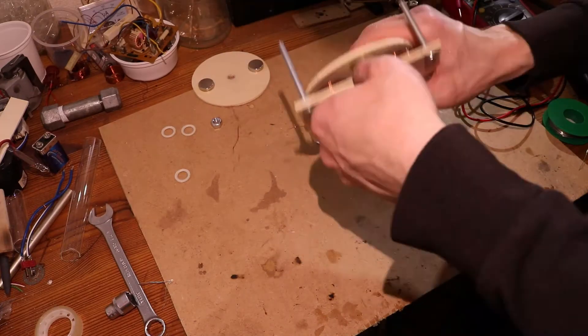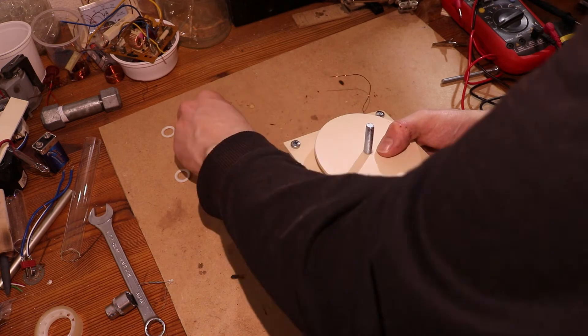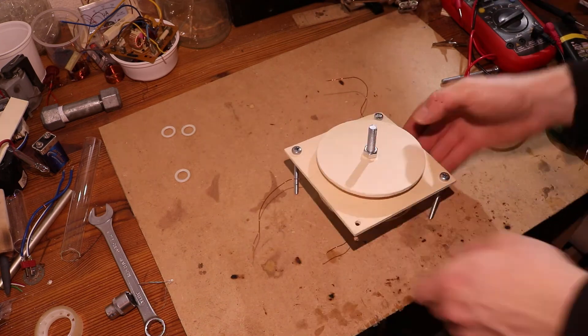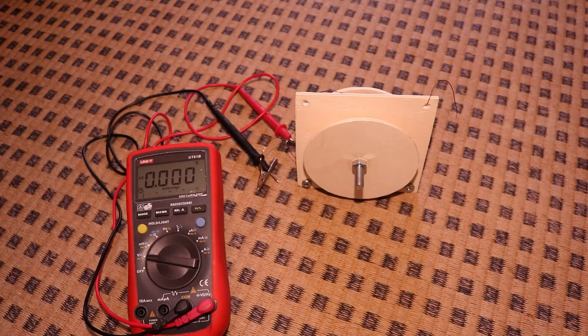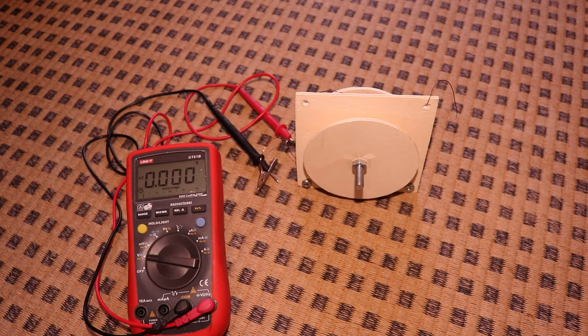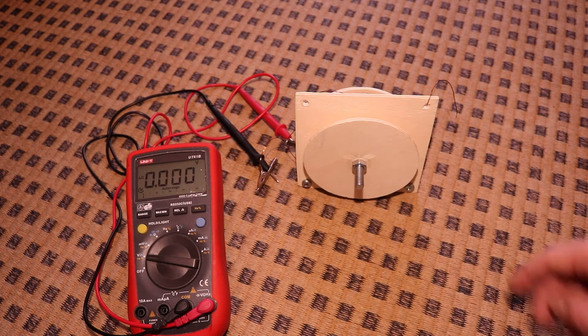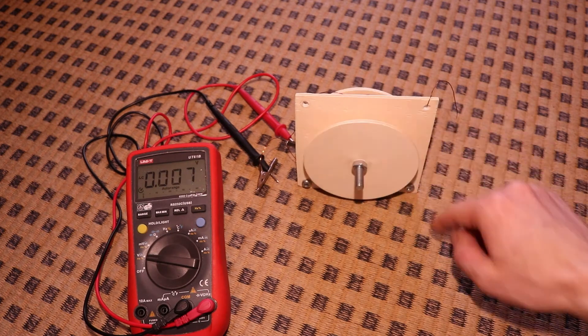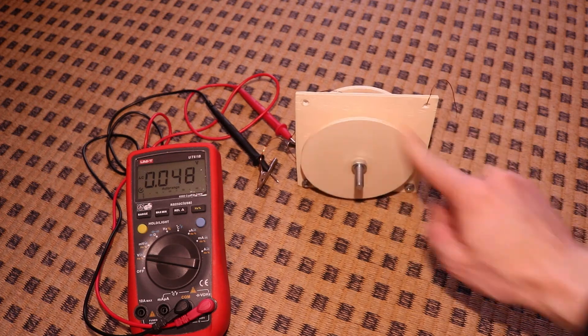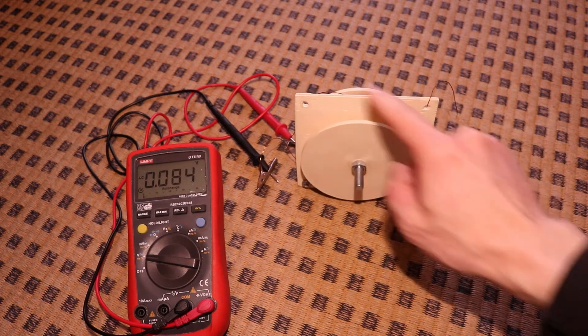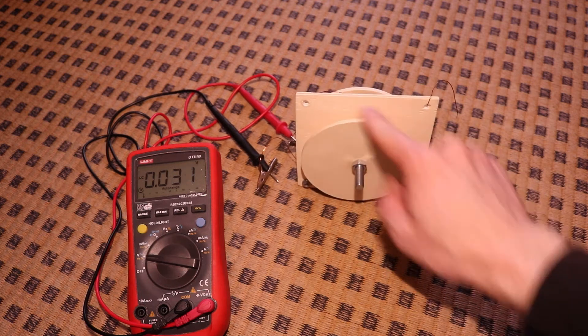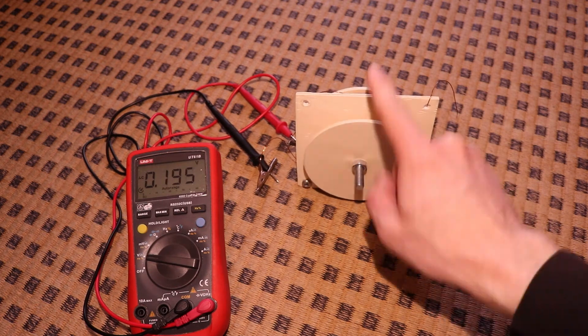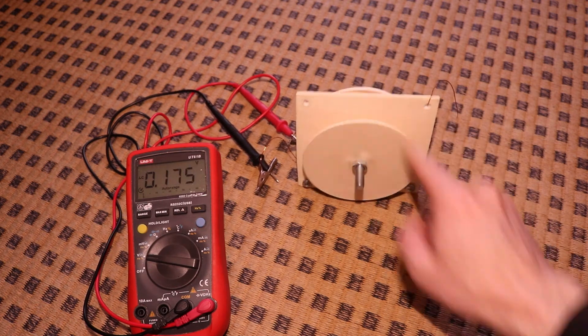I put everything together with some spacers so the magnets are not hitting the coils. Like I said, I don't have a lot of expectations. I have a multimeter hooked up, and if I turn it slightly you can see I can generate like 0.1 volts. If I go really fast, I can get 0.2 volts.